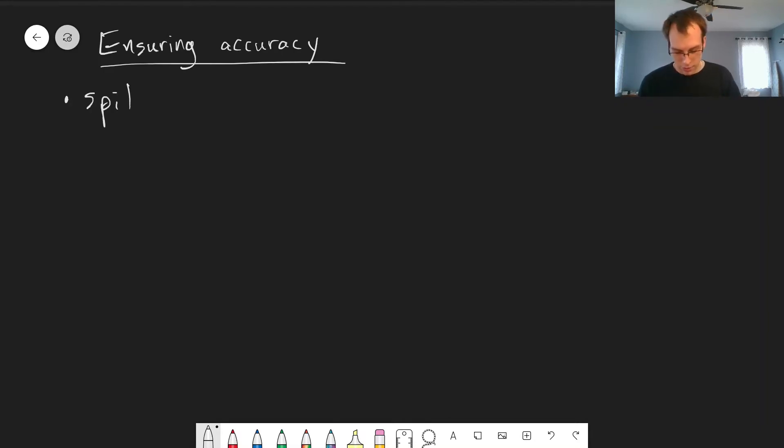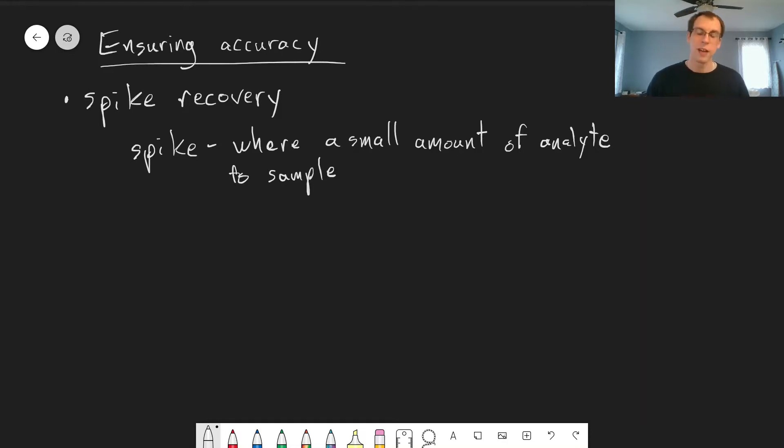So how can you do this? There are a couple of things that can be built into your method. One is something that's called spike recovery. This is a quick and easy way to double check that you're getting something that is accurate, that truly measures the concentration of the analyte you're trying to measure. A spike is where you add a small amount of your analyte at high concentration to your sample, and you know the concentration of the analyte that you're adding. So you're adding a known amount of your analyte, and there's some analyte that's already present as well.